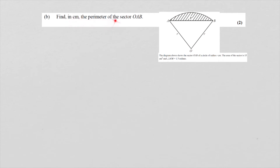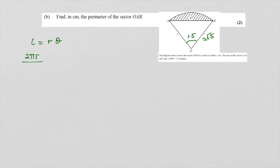Find in cm the perimeter of the sector OAB. We now know the radius is 2 root 5. To find the perimeter of the sector, we need to find arc AB. The angle is 1.5 radians. The arc length L equals R theta. If you can't remember that, recall that the circumference 2 pi R divided by 2 pi equals arc over theta, so L equals R theta.